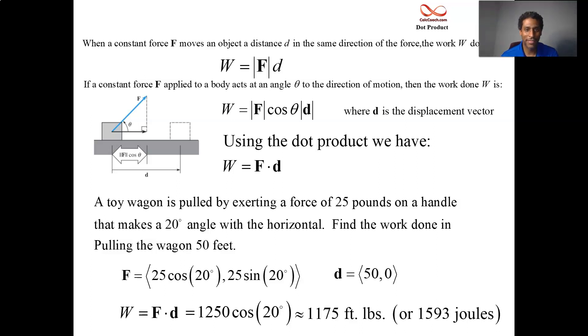But there you have it. Two applications of the dot product. The dot product is associated with the angle between two vectors. It's associated with the projection vector. We could find the direction cosines of a vector. We could find work done by a force. This ends the dot product series. Thank you for watching.